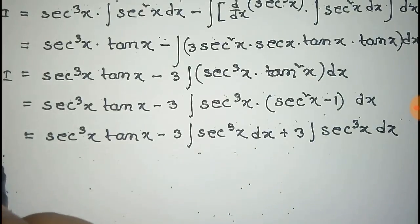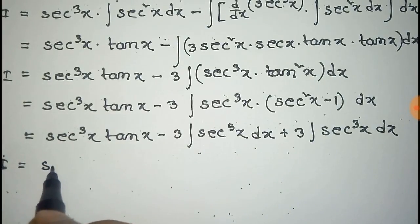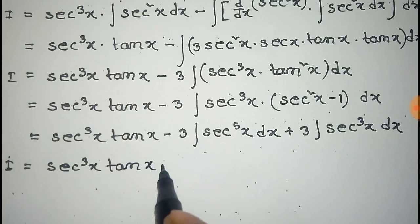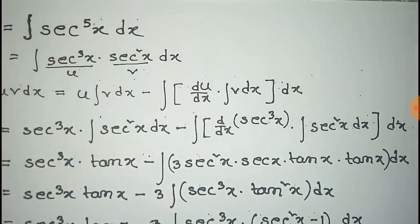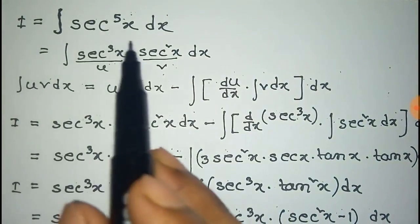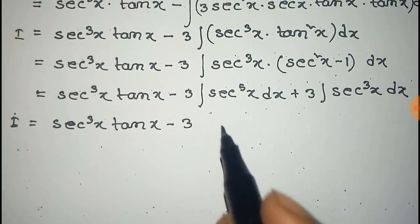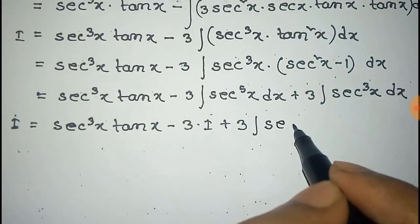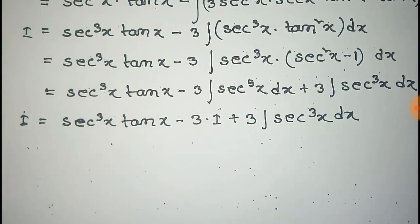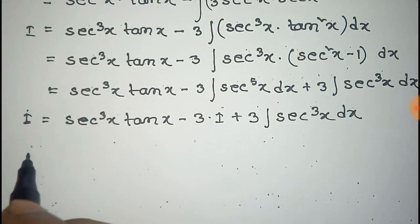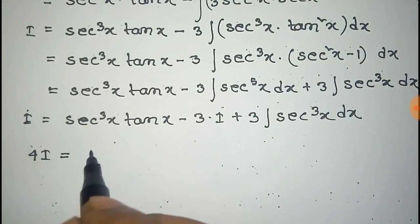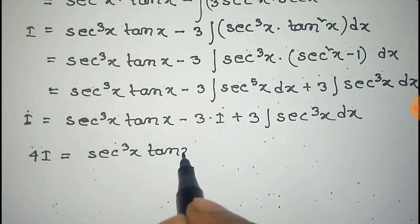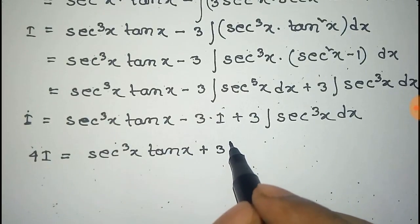Now we can see I is equal to sec to the power 3x tan x minus 3 times the integration of sec to the power 5x, which is given by I according to our initial assumption. So we can write I plus 3I, and the remaining integration of 3 sec to the power 3x dx. This 3I and I make 4I, which equals sec to the power 3x tan x plus 3 times the integration of sec cube x.